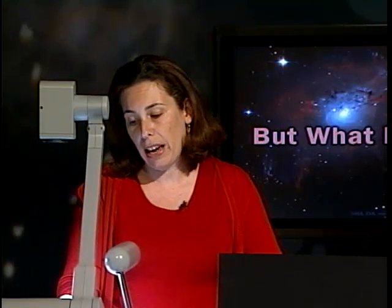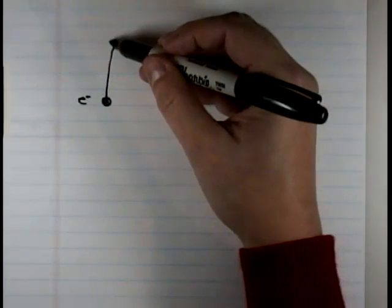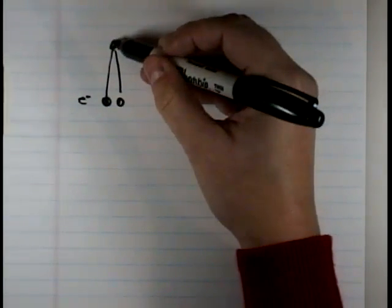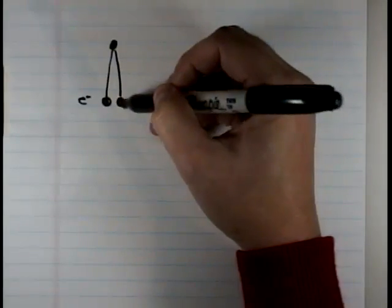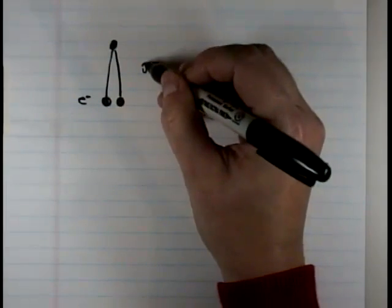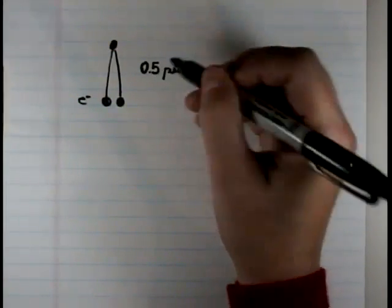So let's say I have an electron here, and it's being accelerated, and it goes up, and then it comes back down, and it takes, for example, half a second to go up and down.